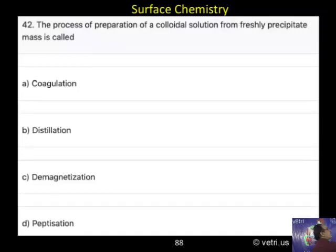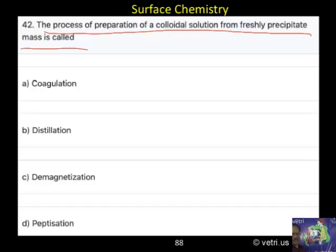Question 42: The process of preparation of a colloidal solution from freshly precipitated mass is called: A. Coagulation, B. Distillation, C. Demagnetization, D. Peptization.